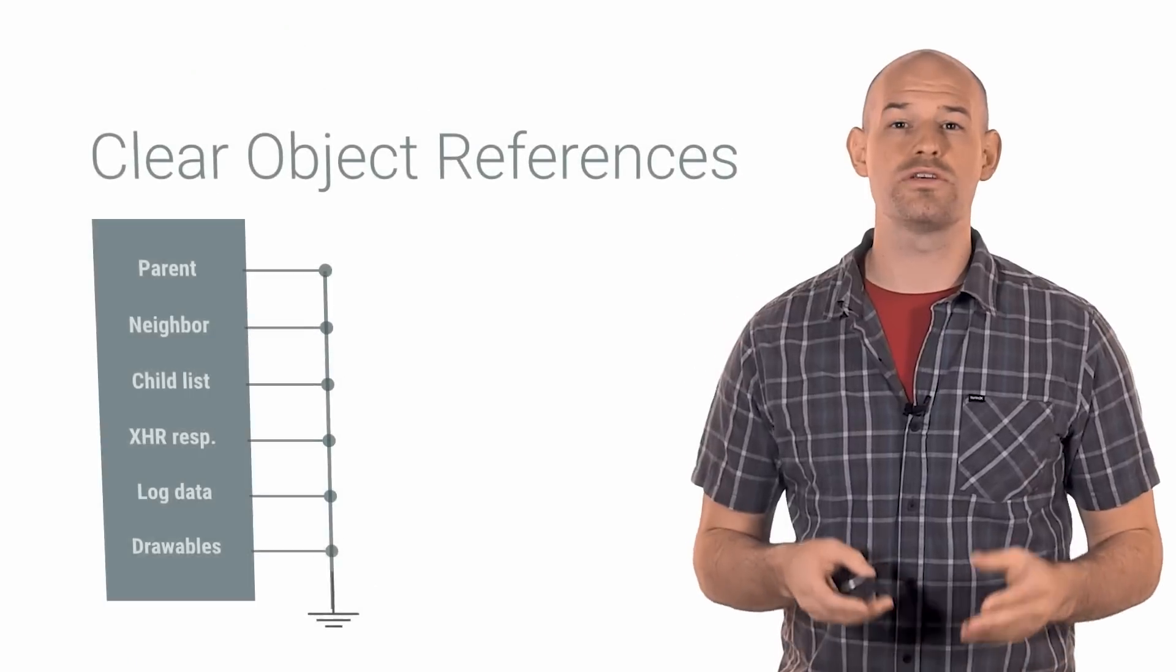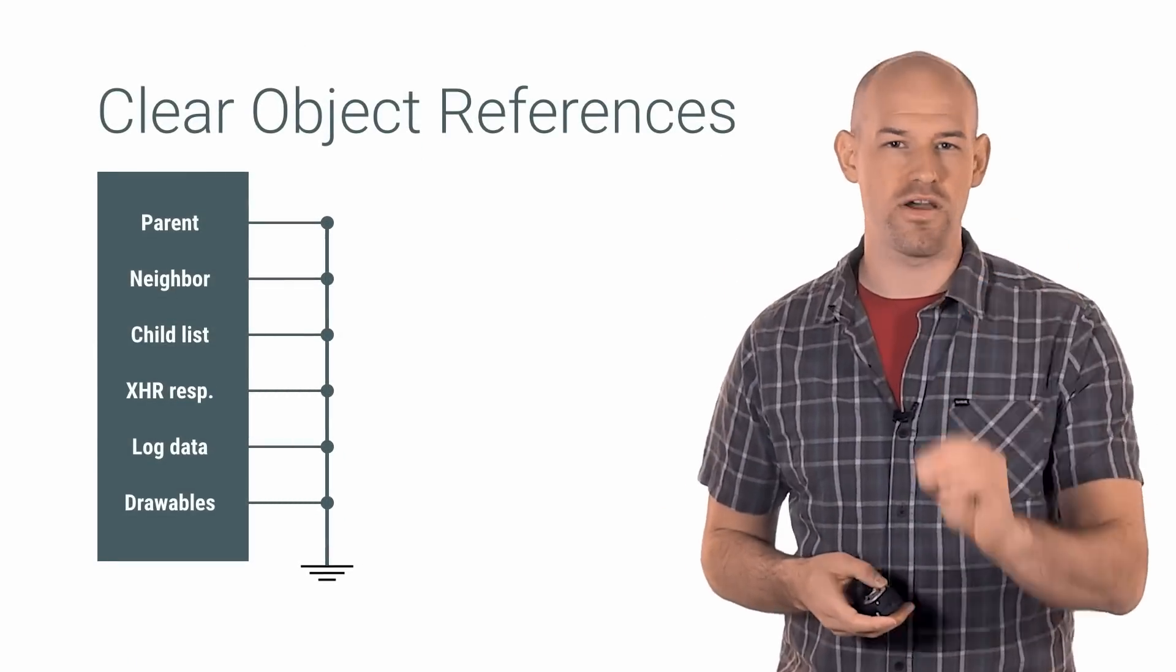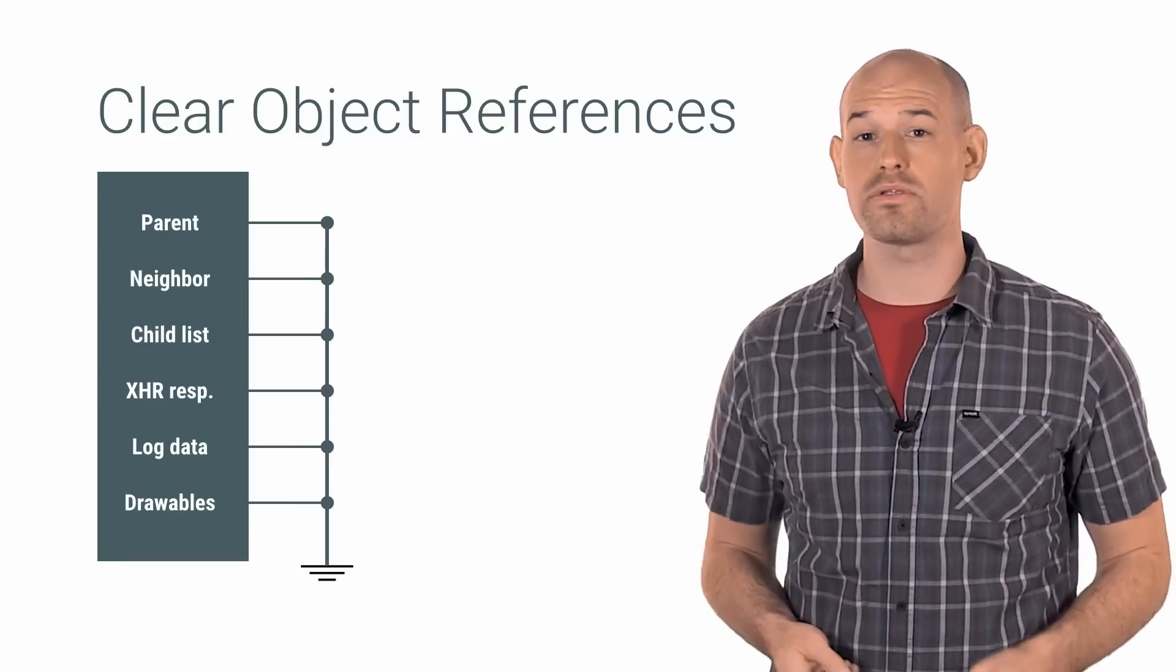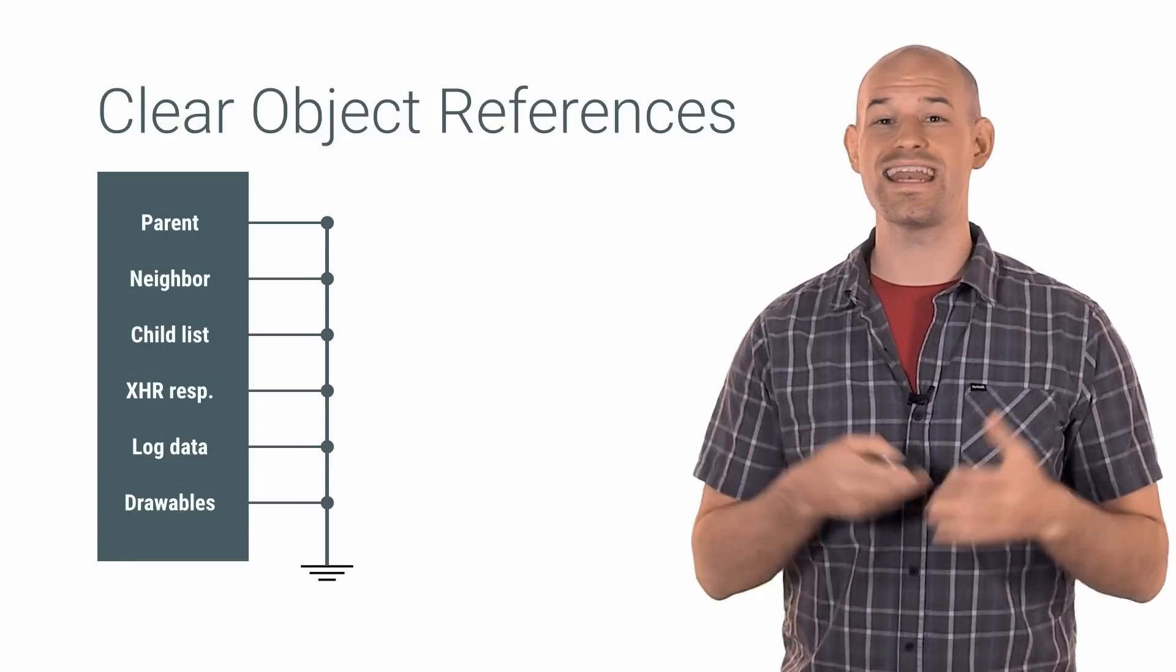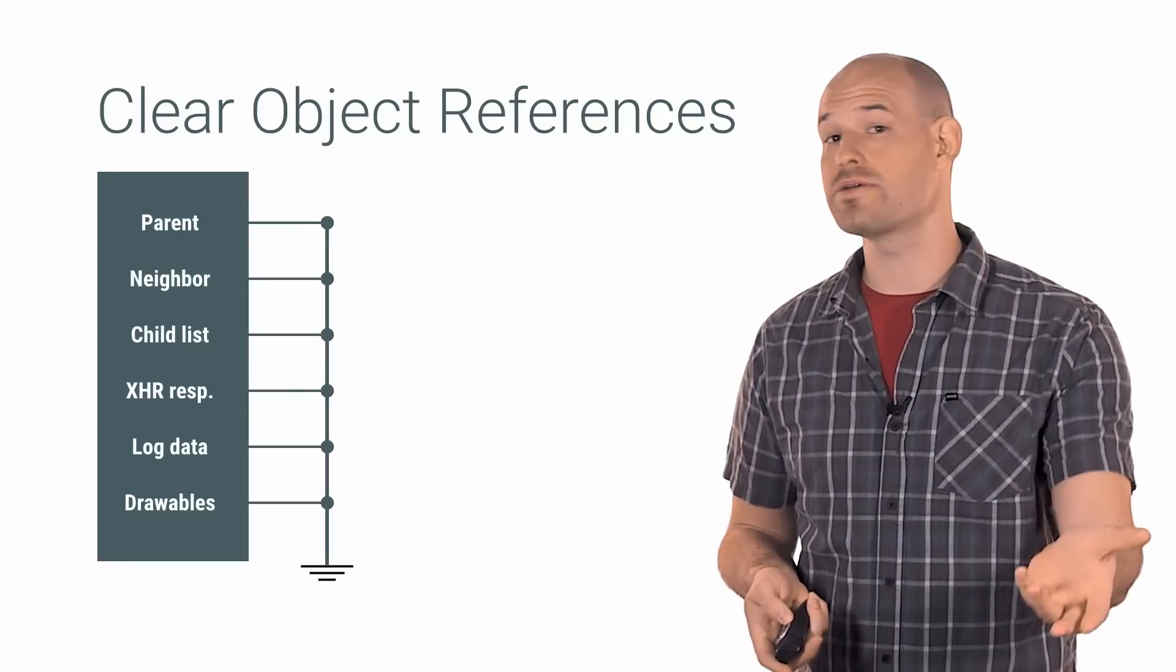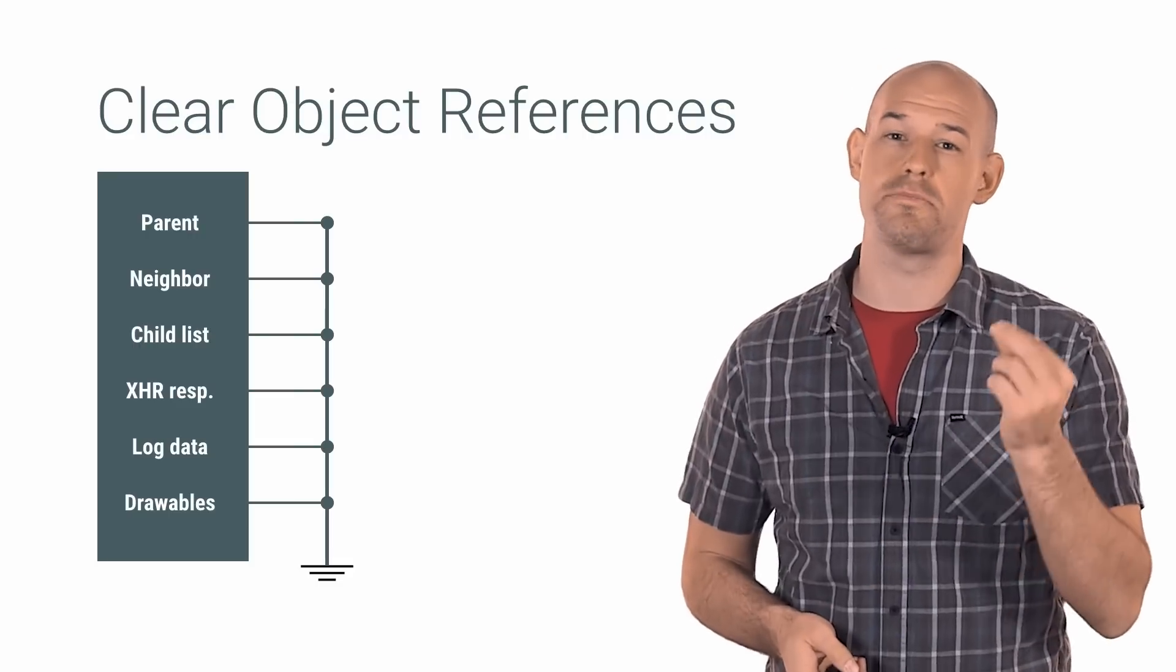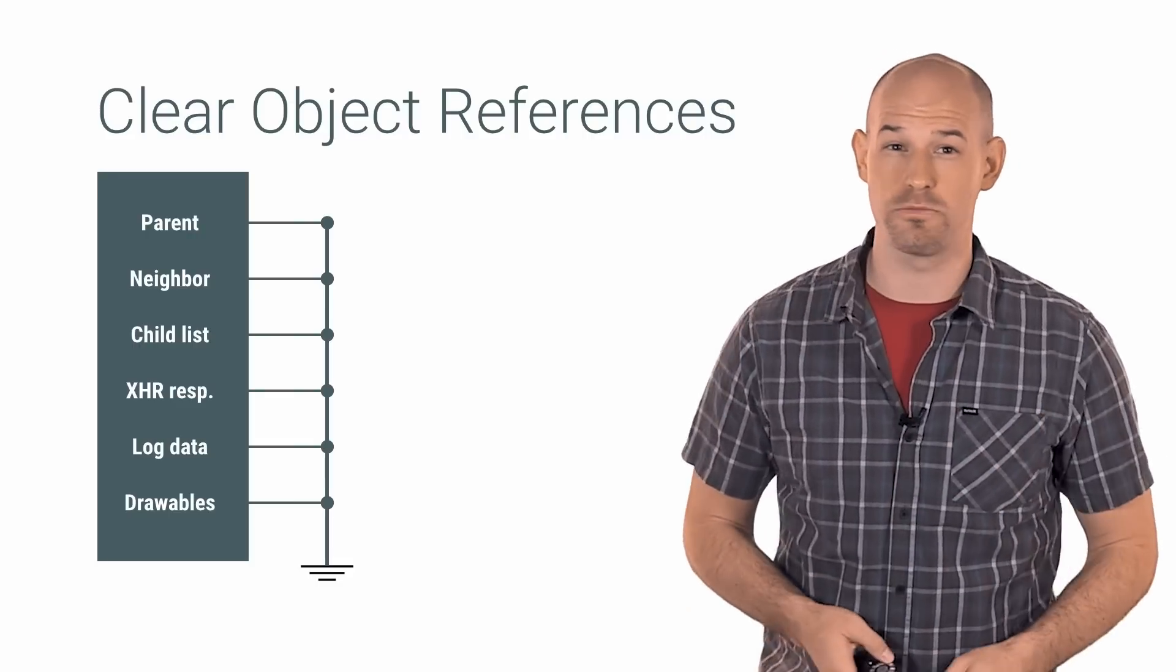And finally, in order to make sure that all of your objects are returned to the pool properly, make sure that member variables of these objects are properly cleaned up so that it doesn't contain any references to any other objects in memory that might be valid for the garbage collector to clean up later. If you're not careful here, you can end up creating a lot of persistent memory leaks for these objects in your pools.